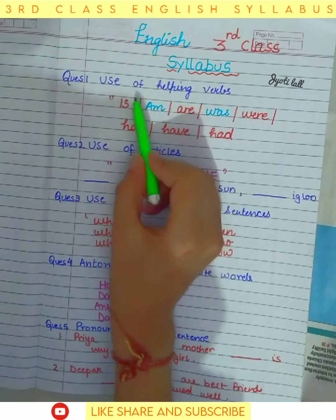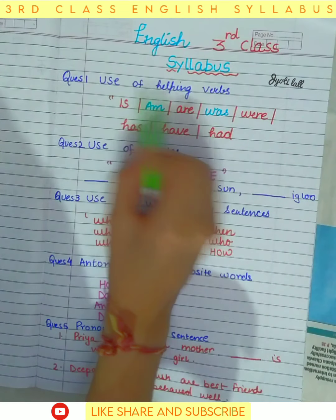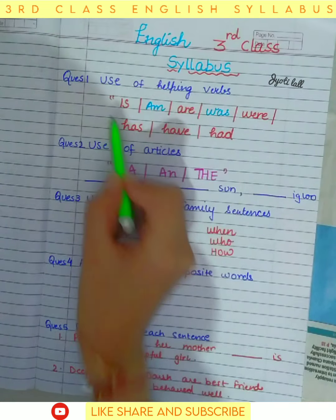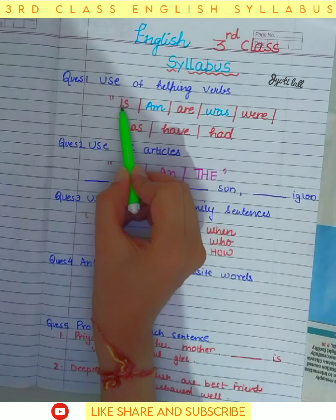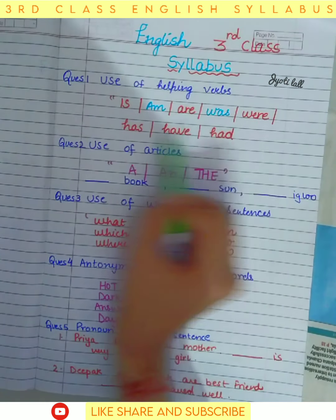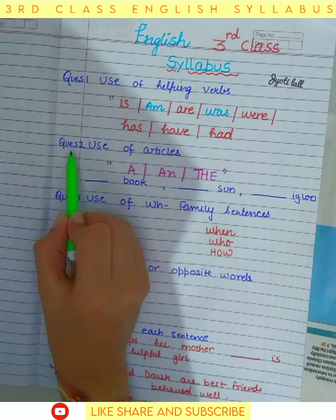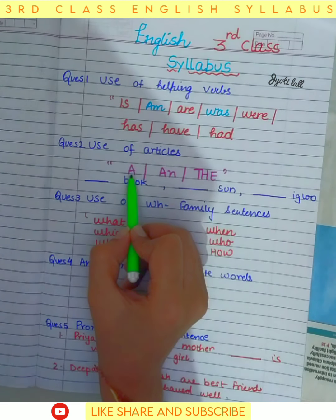Good morning everyone. Today I am going to tell you about third class labels. The very first topic is the use of helping verbs. Helping verbs are verbs that help — that is, is, am, are, was, were, has, have, and had. These are all the helping verbs.